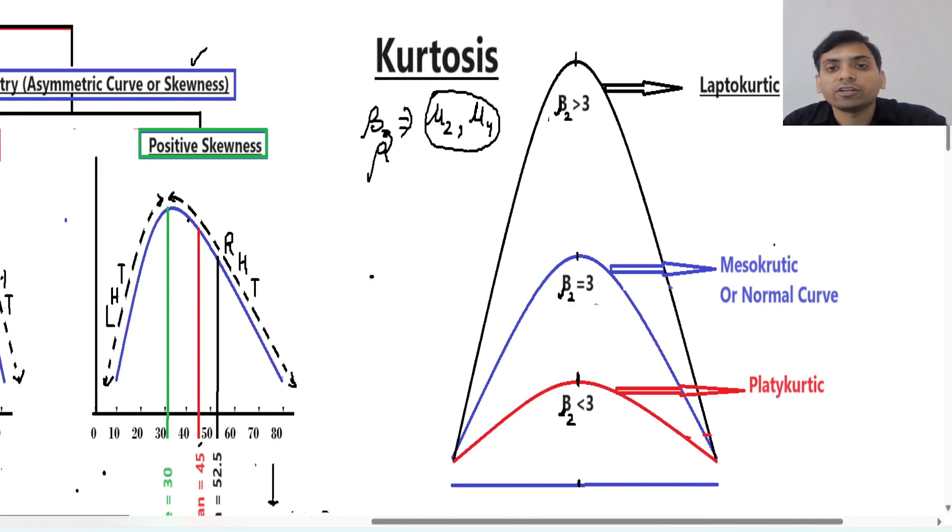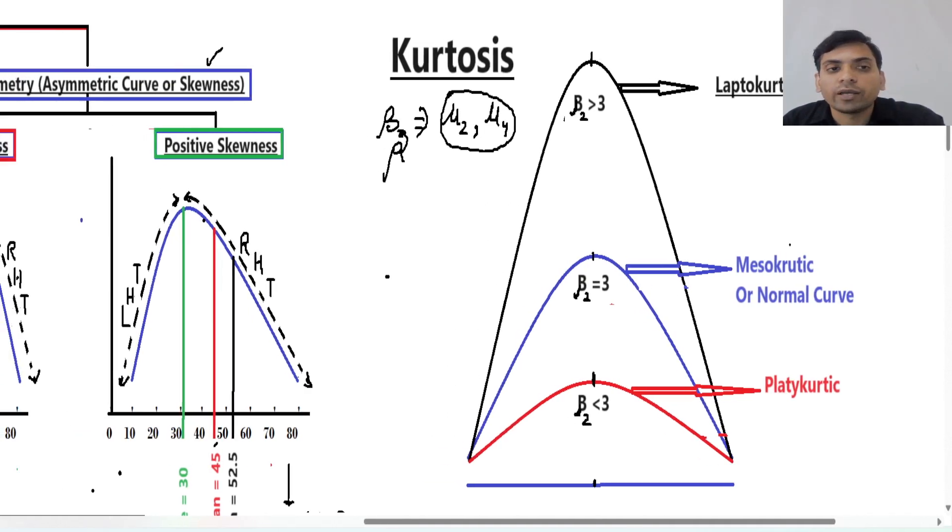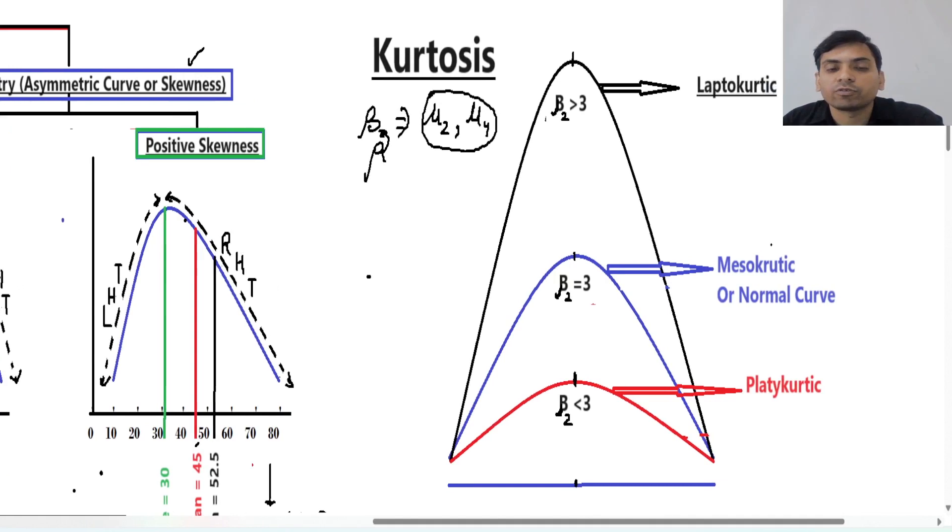If for this kind of data you are getting beta 2 is exactly 3, then this is good data or we can say normal data. Otherwise, in these 2 situations data may be in abnormal situation. This is the concept of kurtosis. I hope you understand this concept of kurtosis.